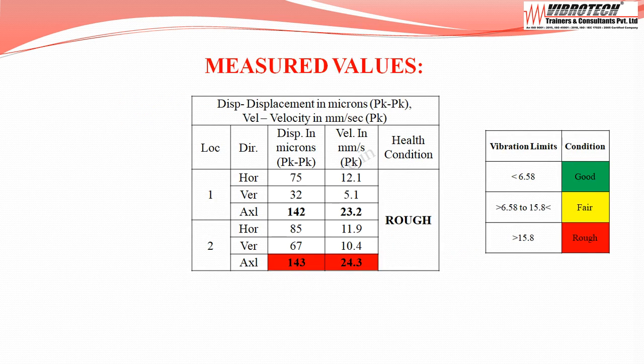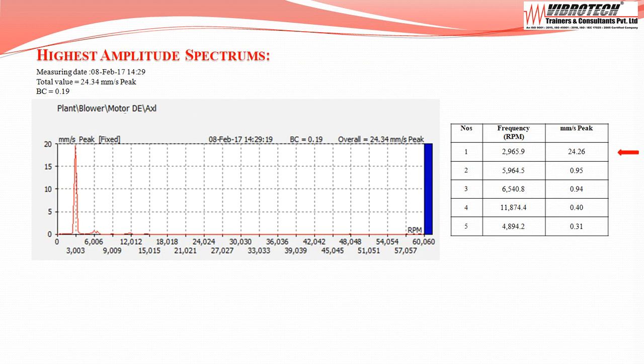The vibration values are maximum at the motor drive end in the axial direction, with velocity up to 24.3 mm/s peak and displacement of 143 microns peak-to-peak. The equipment falls under the rough category, with vibration levels exceeding acceptable limits.